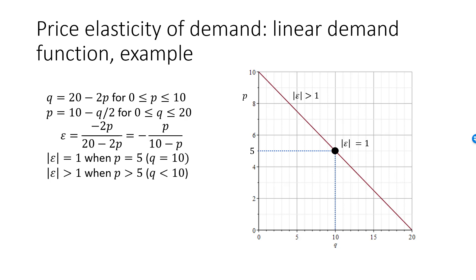If you try any P greater than 5, say 6, then epsilon is minus 6 over 4, or minus 1.5. The absolute value of epsilon is greater than 1, and demand is elastic.